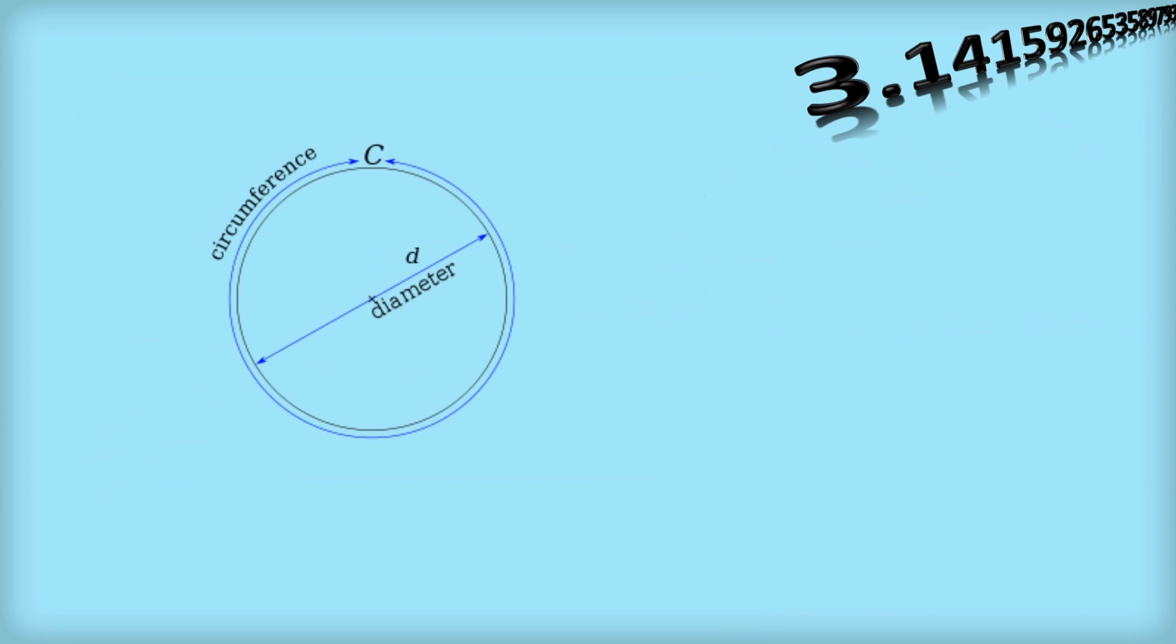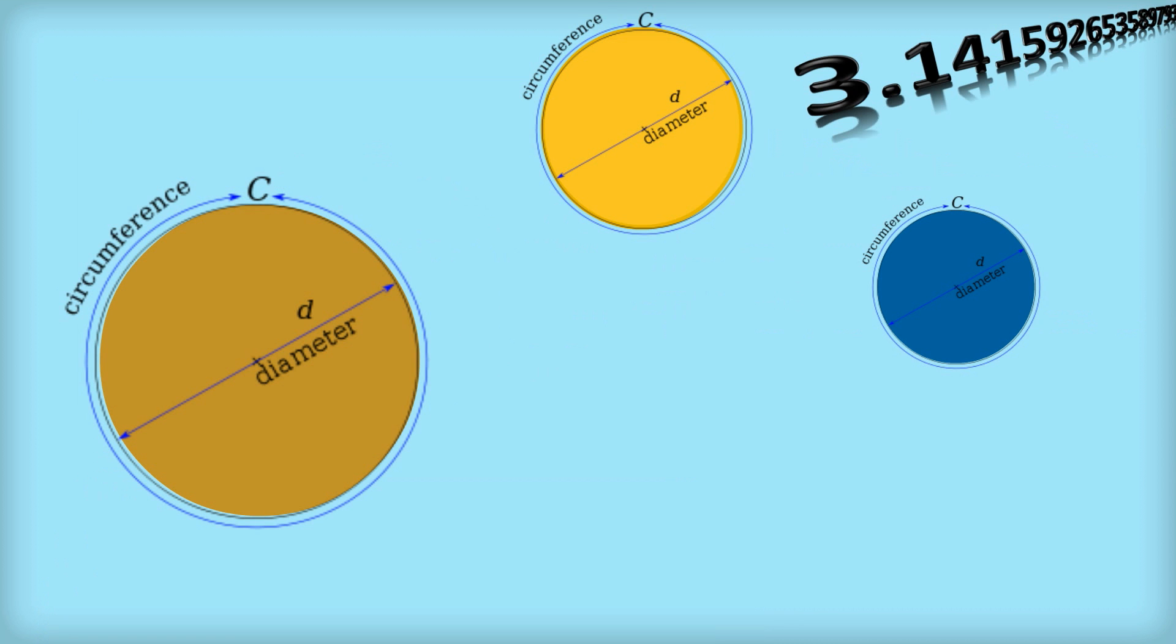And the first thing that's not obvious I suppose is, is pi the same for every circle? Well, I suppose if we were joking we could say we could prove it by history. If pi was different for every circle, there wouldn't be this one special number pi, would there? And I wouldn't be doing this video. So therefore we can conclude that pi must be the same for every circle. But seriously, mathematicians have proved that pi is the same for every circle.